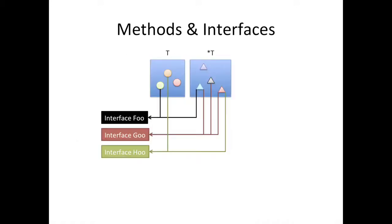One great thing about Go is that you might satisfy an interface that's defined later — after you've already written your methods. In other languages you'd have to go back and retrofit things. Let's just summarize: I have a type T, and on one side I put all methods defined to receive T — say three methods — and I also have four methods defined to receive star T.